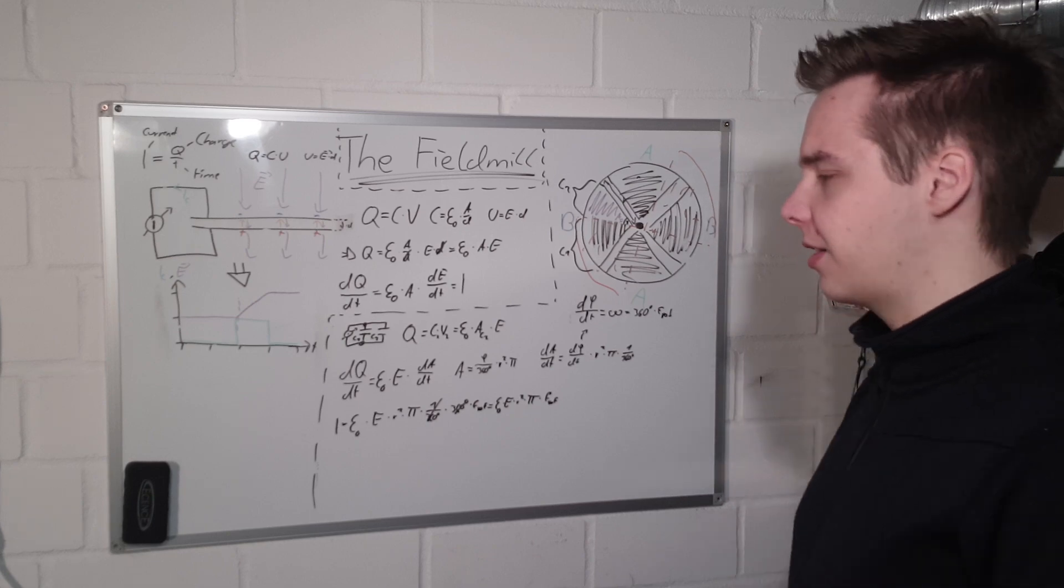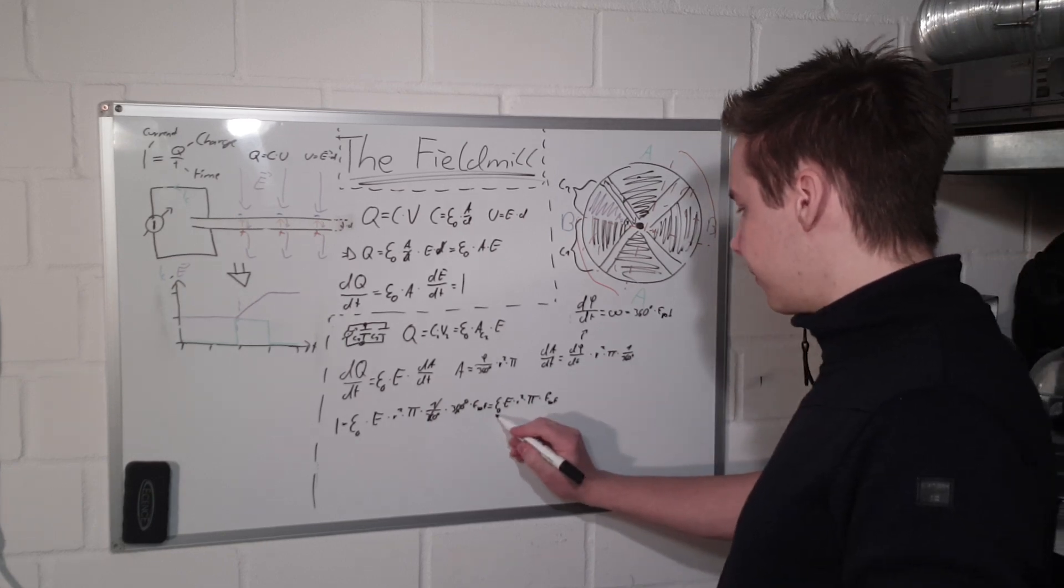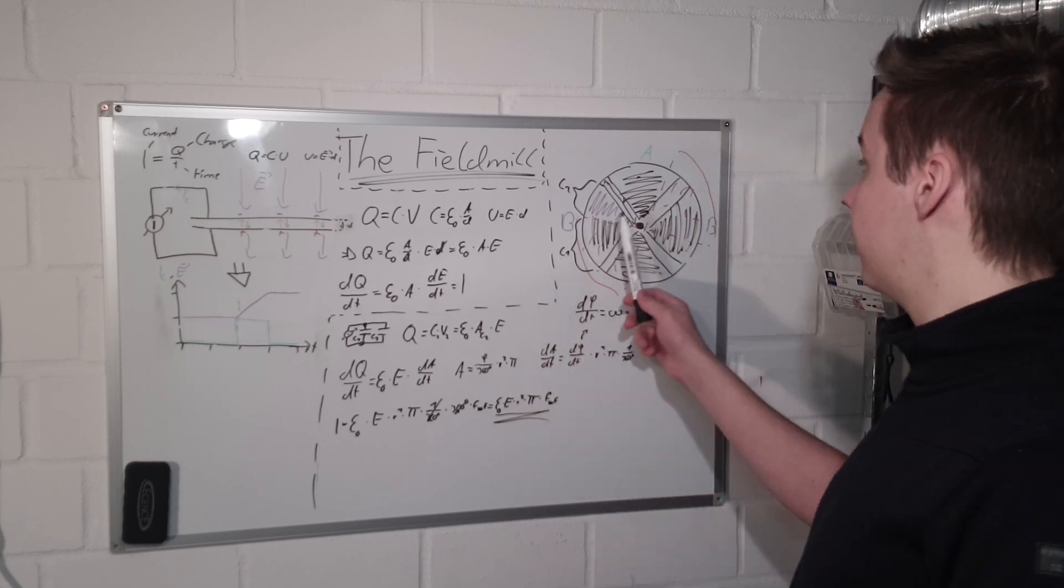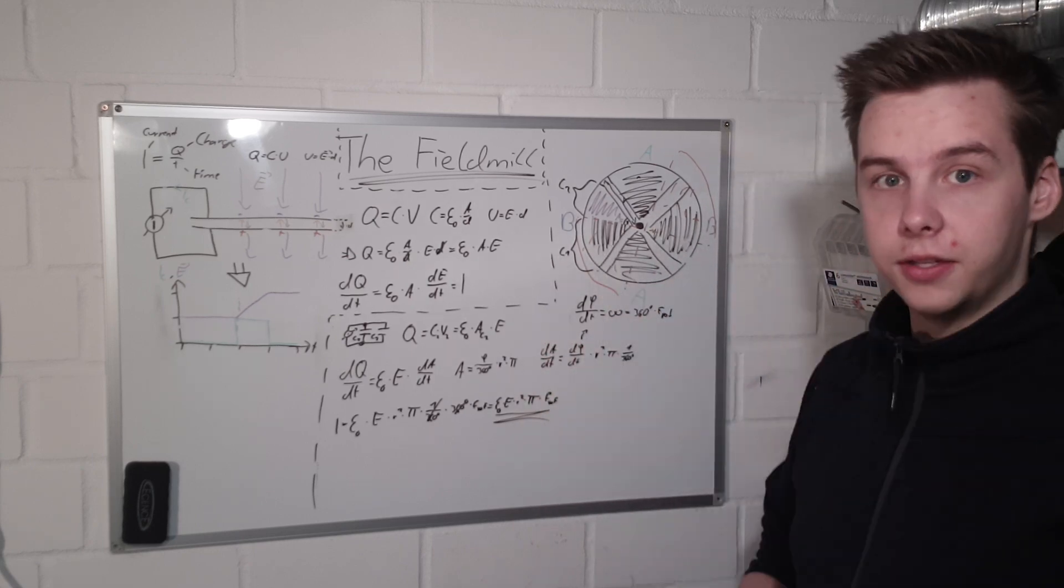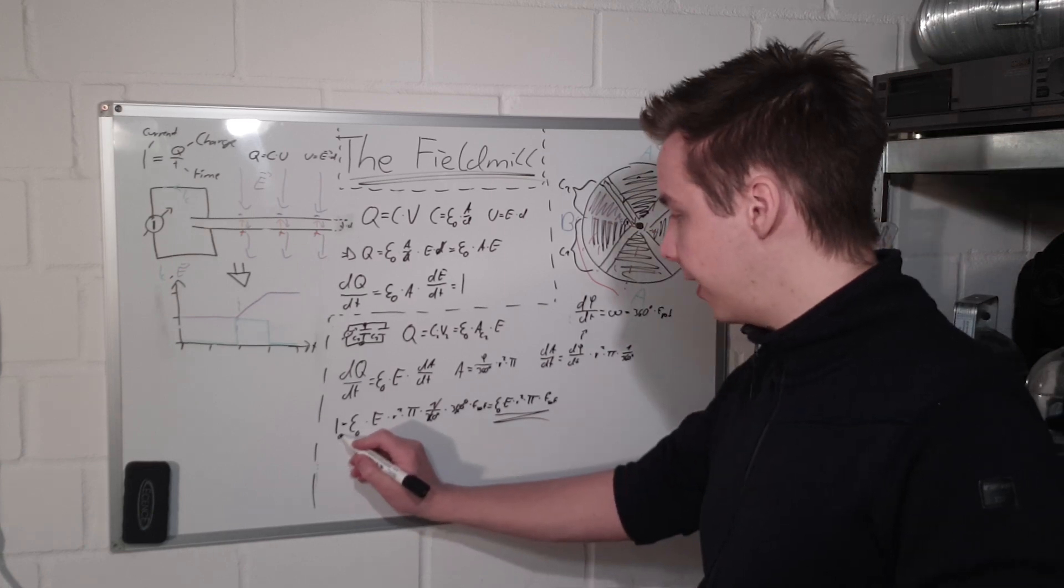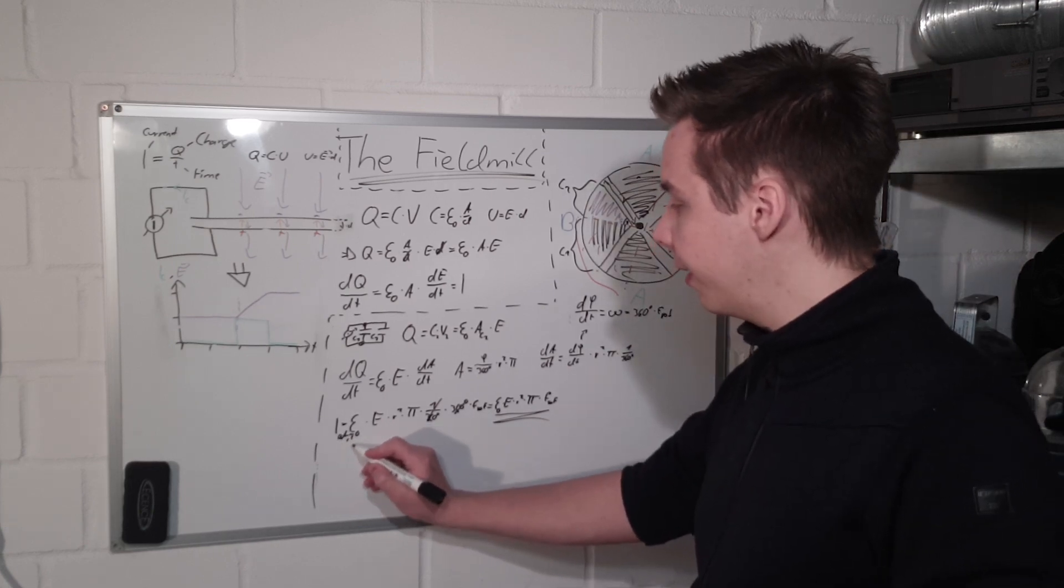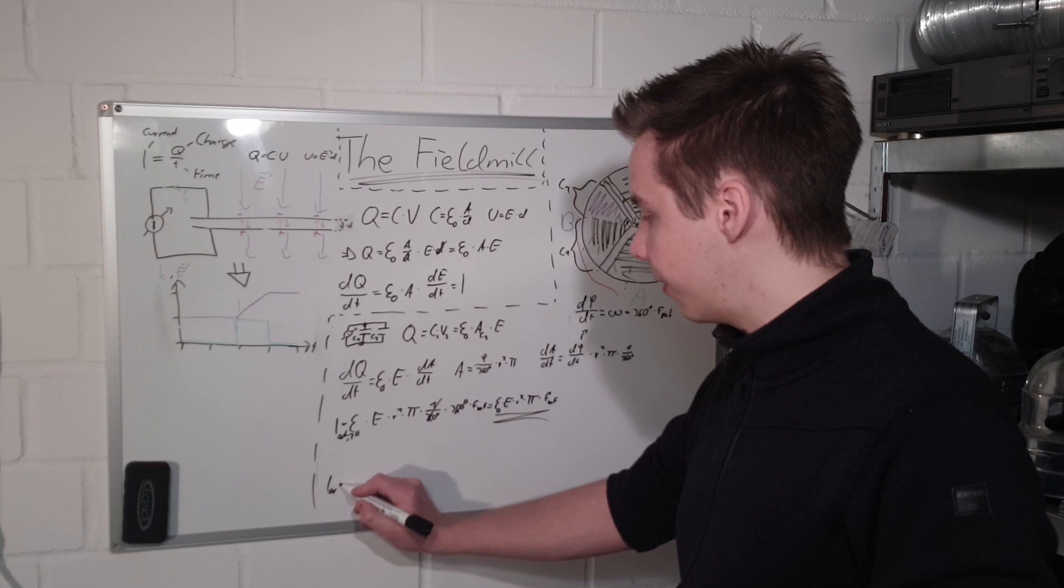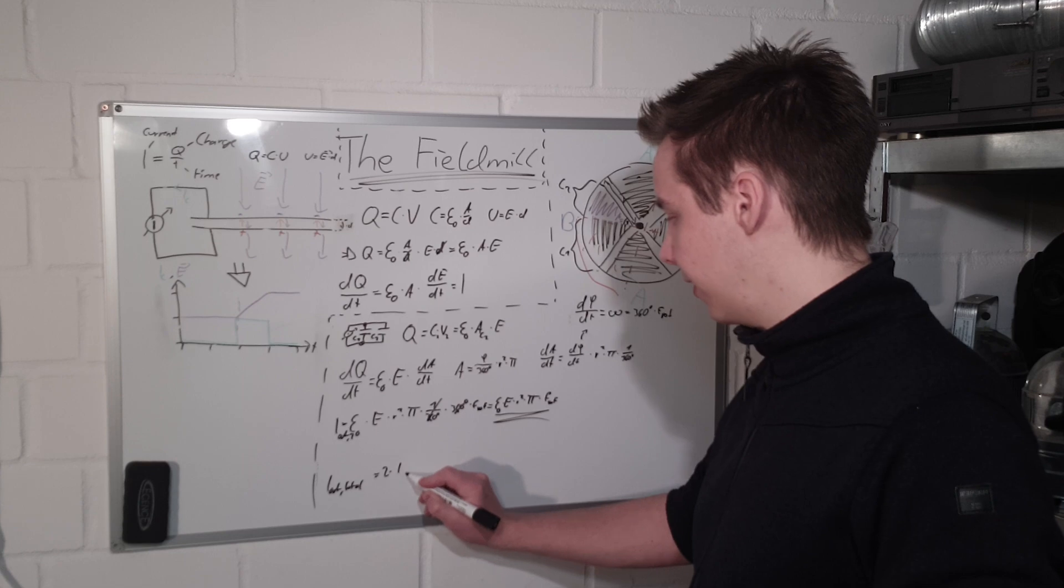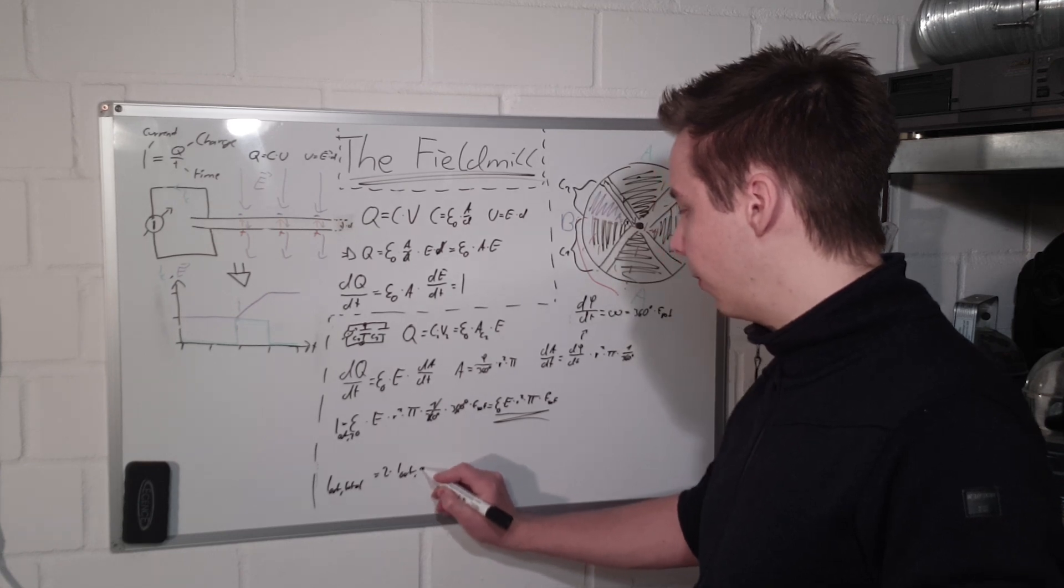And we are left with epsilon zero times E times R squared times pi times rotational frequency. So this here is our output current from one electrode. Now we have got two electrodes connected in parallel. So we have twice this.